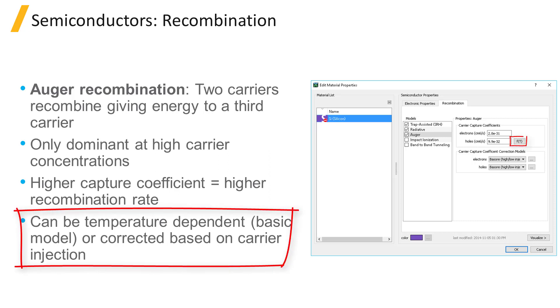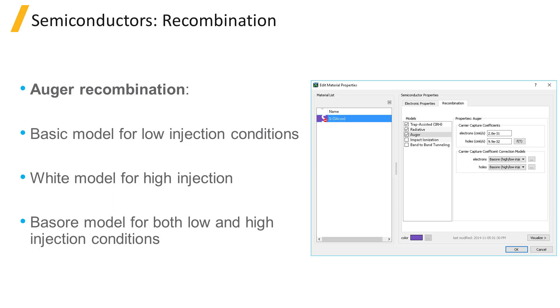The capture coefficient can be defined to be temperature-dependent. Moreover, two correction models named WITE and BASER are available. The BASIC model is suitable for devices where Auger recombination is moderate, low injection conditions. The WITE model can be used as a correction to the BASIC model and accounts for the reduction in the Auger recombination rate observed at high carrier densities.